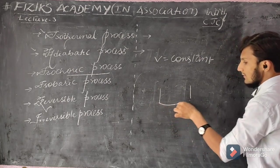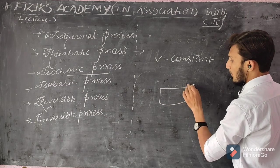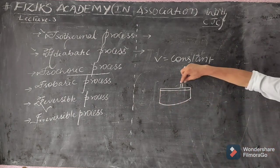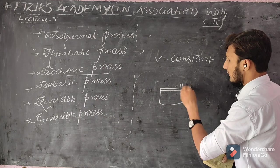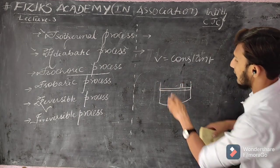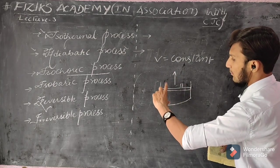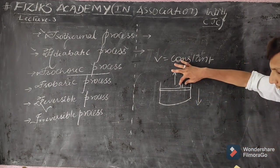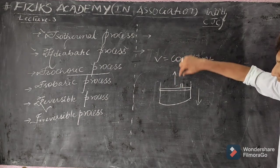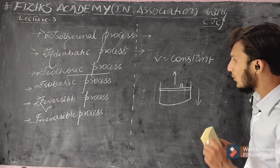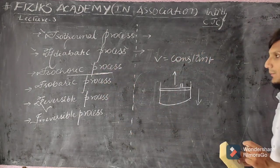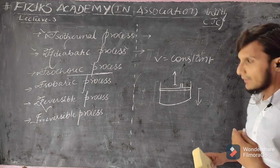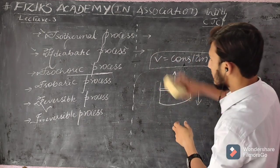Consider a container with a movable piston. If I move the piston up, the available volume increases; if I move it down, the available volume decreases. In the isochoric process we are neither moving the piston up nor down, meaning the volume neither increases nor decreases — the volume remains constant.